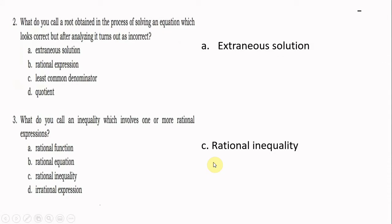Number 2: What do we call a root obtained in the process of solving an equation which looks correct but after analyzing it turns out as incorrect? That is called an extraneous solution.